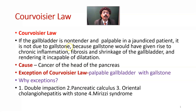What is Courvoisier's Law? If the gallbladder is non-tender and palpable in a jaundiced patient, it is not due to gallstone, because gallstone would have given rise to chronic inflammation, fibrosis and shrinkage of the gallbladder, rendering it incapable of dilatation. That is Courvoisier's Law.